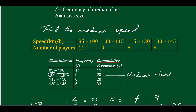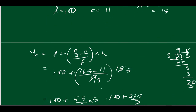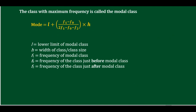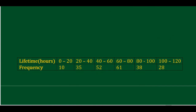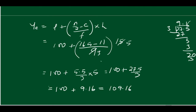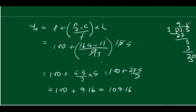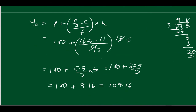The unit is kilometres per hour. So the median speed is 109.16 kilometres per hour.